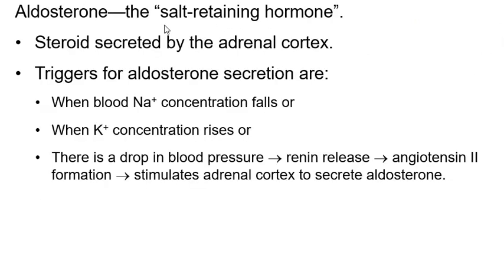Aldosterone is the salt-retaining hormone — it keeps you from peeing out your salt. If you don't pee out salt, water stays with it, so you're also not peeing out water. Aldosterone helps if your sodium concentration falls, if you have too much potassium, or if blood pressure drops — such as from an injury, surgery, or bleeding. These trigger renin release, then angiotensin 1, then angiotensin 2, then the adrenal cortex secretes aldosterone. When you see aldosterone, think: that's the one that holds salt in your body.